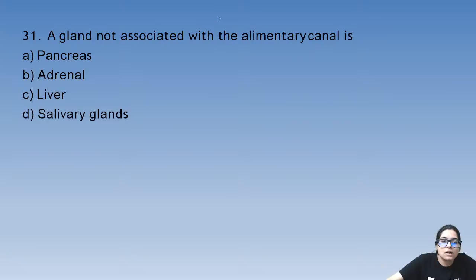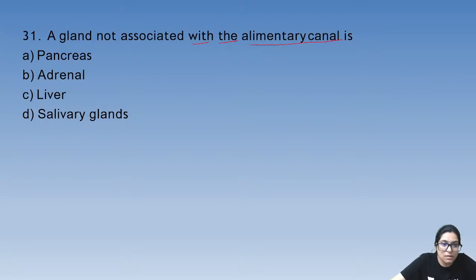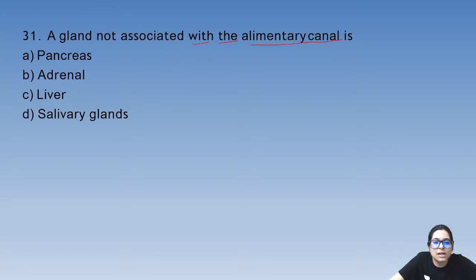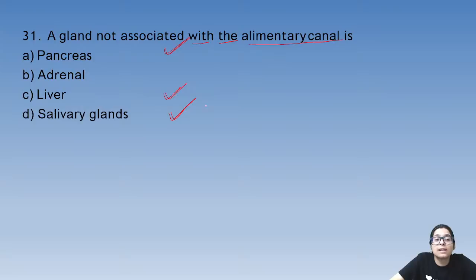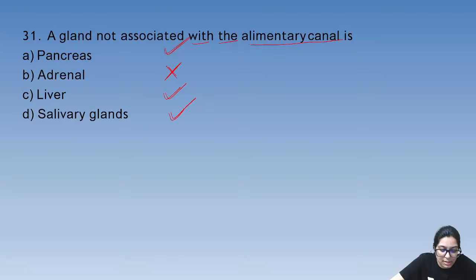Question 30 answer is D. A gland not associated with the alimentary canal: pancreas is associated, liver produces bile, salivary glands produce saliva — but the adrenal gland is not associated with the alimentary canal.